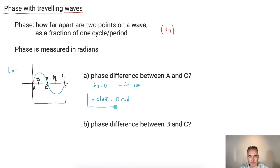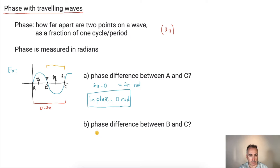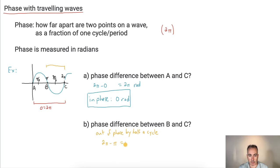Let's look at the next one — the phase difference between B and C. You could say: what's the distance from here to here? In other words, what's 2π minus π? So 2π minus 1π is just equal to π. That means these have a phase difference of π radians. Let's look at another example just to make sure it makes sense.